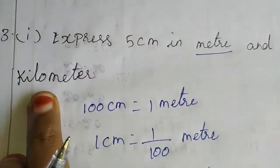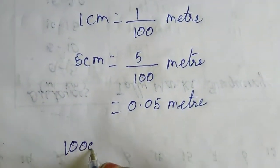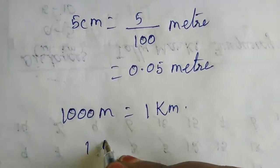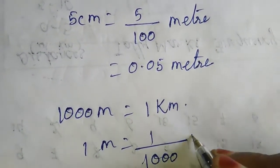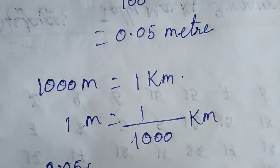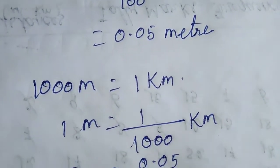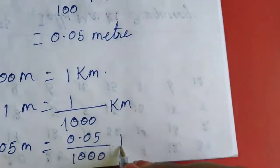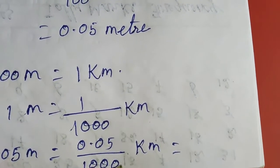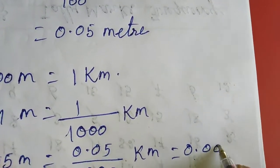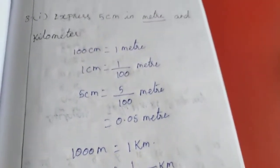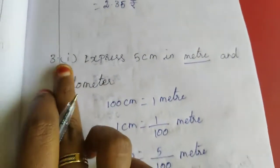For changing to kilometers: 1000 meters equal to 1 kilometer, so 1 meter equals 1/1000 kilometer. We have 0.05 meter, so 0.05 divided by 1000 kilometers. We already have 2 digits, but we need 3 digits total, so we add zeros: 0.00005 kilometers. This is the answer for the third sum, first subdivision.